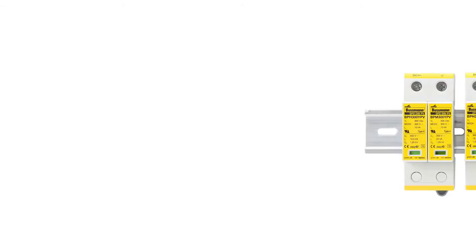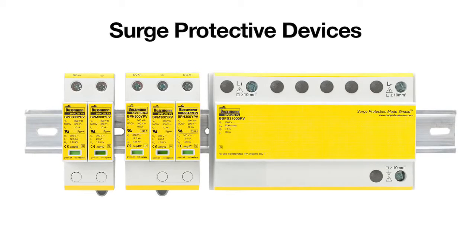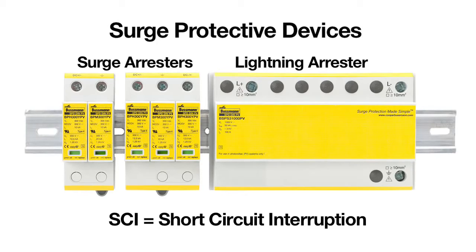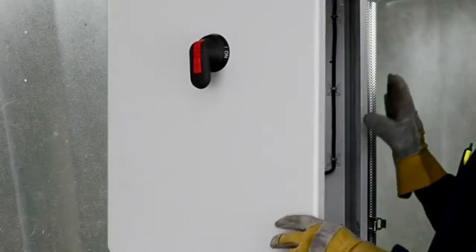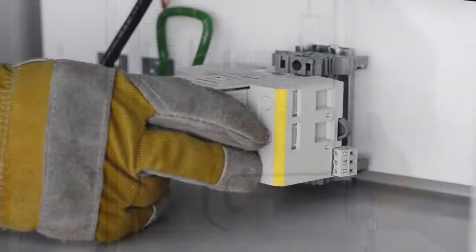Busman offers a complete product line for all photovoltaic applications up to 1200 volt DC. Surge arresters provide patented fast-acting short circuit interruption technology that responds efficiently to over-voltage conditions. The Busman product line is designed to be conveniently installed using standard DIN rail mounting options.